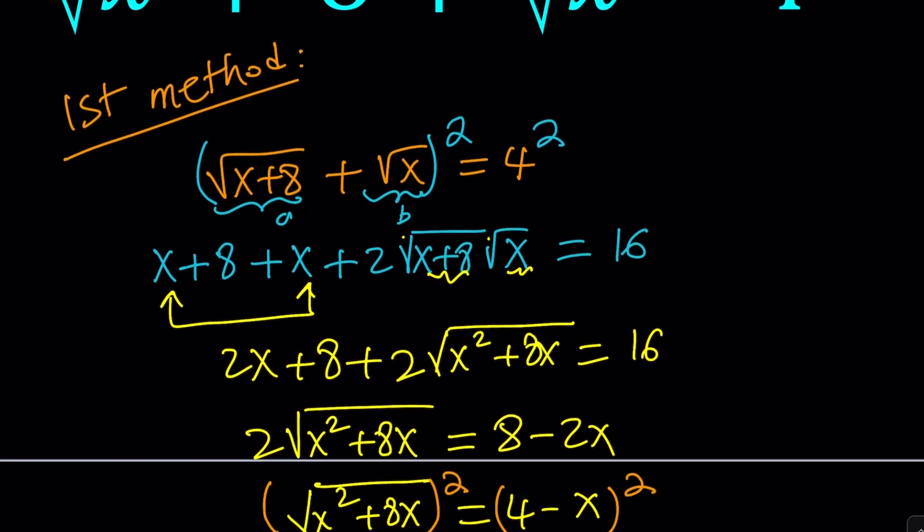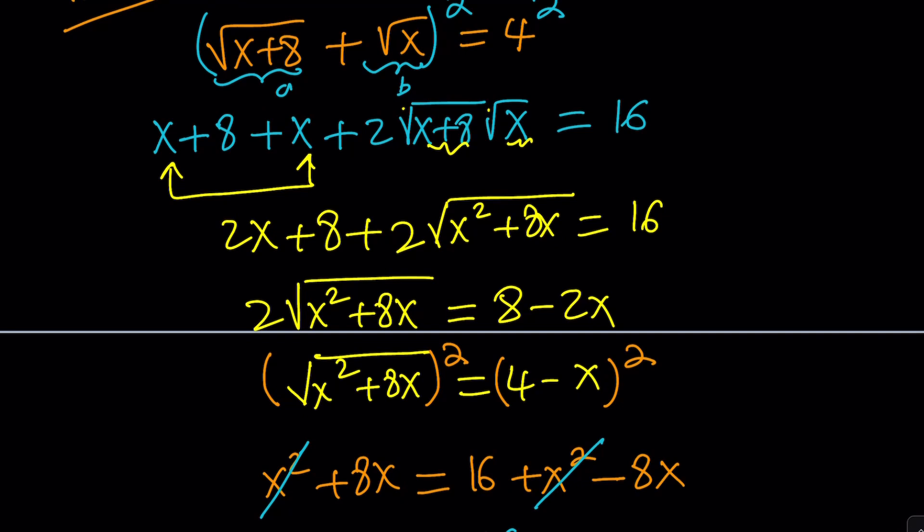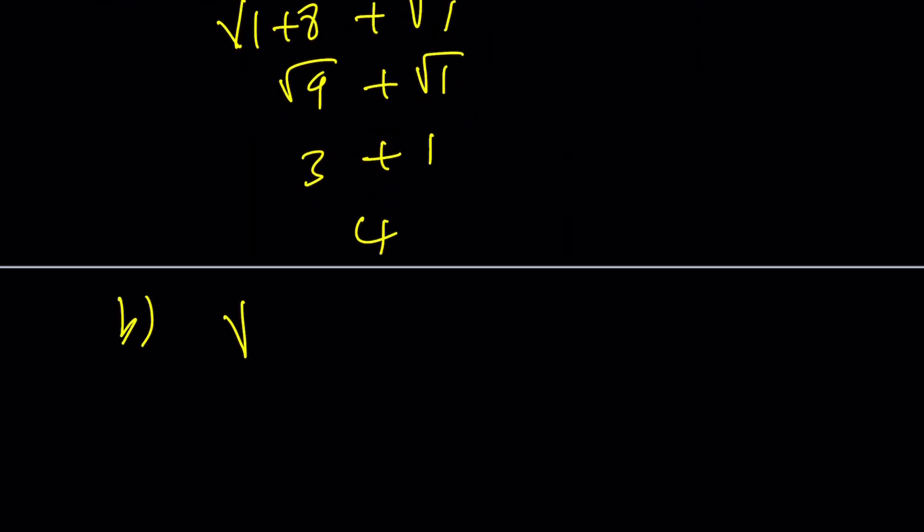So that's the first method, or sort of 1a. What about 1b? 1b starts off with the original problem. But instead of squaring both sides, you isolate. You put the radicals on different sides. There is a good reason. Let's subtract the square root of x and then square both sides. So let's go ahead and square this and square that.